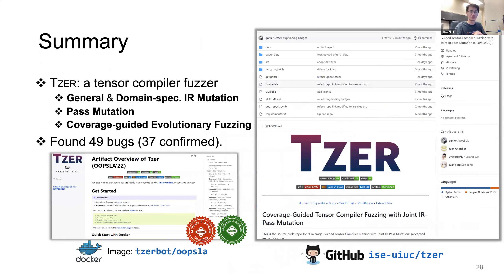To summarize, our work implements TEASER, a tensor compiler fuzzer. We perform general and domain-specific IR mutation and pass mutation. We then apply coverage-guided evolutionary fuzzing to guide the interleaving process of pass mutation and IR mutation, leading to high coverage effectiveness. Our software is open-source on GitHub, and our Docker artifact has also been evaluated.